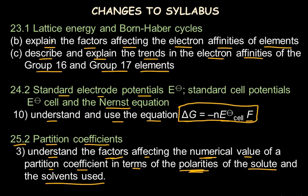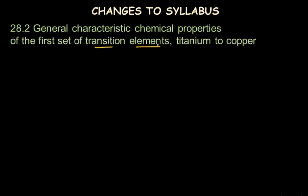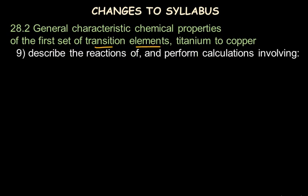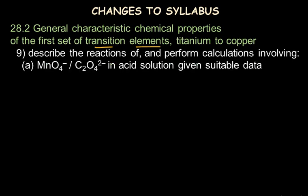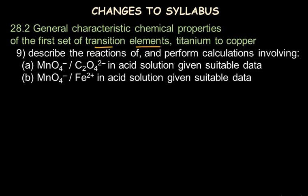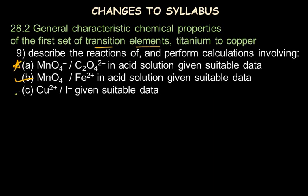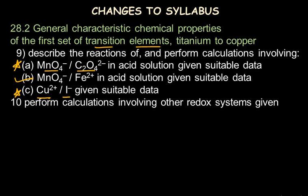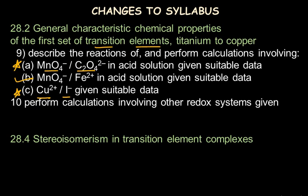The next change is in the topic Transition Elements, where it says: describe the reactions and perform calculations involving manganate and dicarboxylate ion, manganate ion and ferrous ion in acid solution, and copper ion and iodide ion — given suitable data. The subtopics involving manganate reacting with dicarboxylate ion and copper ions reacting with iodide ion are newly added. Additionally, perform calculations involving other redox systems given suitable data is also added.